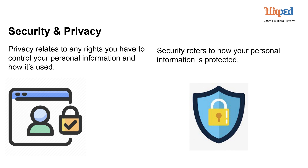Moving forward, let's untangle the closely related concepts of security and privacy. Privacy deals with your rights over your personal information and its usage — it's about having control over who accesses your information and how it's used. Protecting privacy means ensuring that your personal data isn't misused or disclosed without your consent. Security, on the other hand, zeroes in on the protection of your personal information, implementing measures and protocols that safeguard it from unauthorized access, data breaches, and other cyber threats.